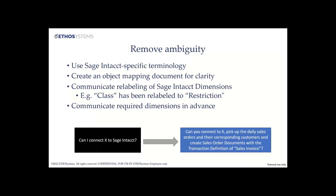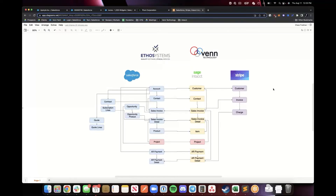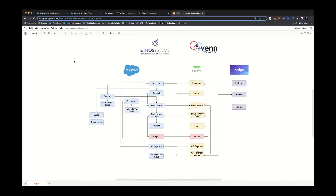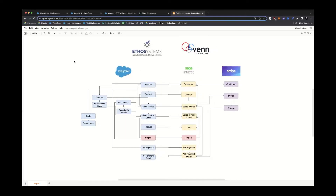Moving into the live demo. Chase takes over screen sharing and displays a diagram showing an example of what their integrations look like. Most people think it's just one-to-one integrations like Salesforce and Intacct, or Intacct and Stripe, but they're increasingly seeing three and four-way integrations that move data from one spot to another and circle back, giving one cohesive tech stack where everyone — sales, accounting, rev ops — can see the status of any customer.